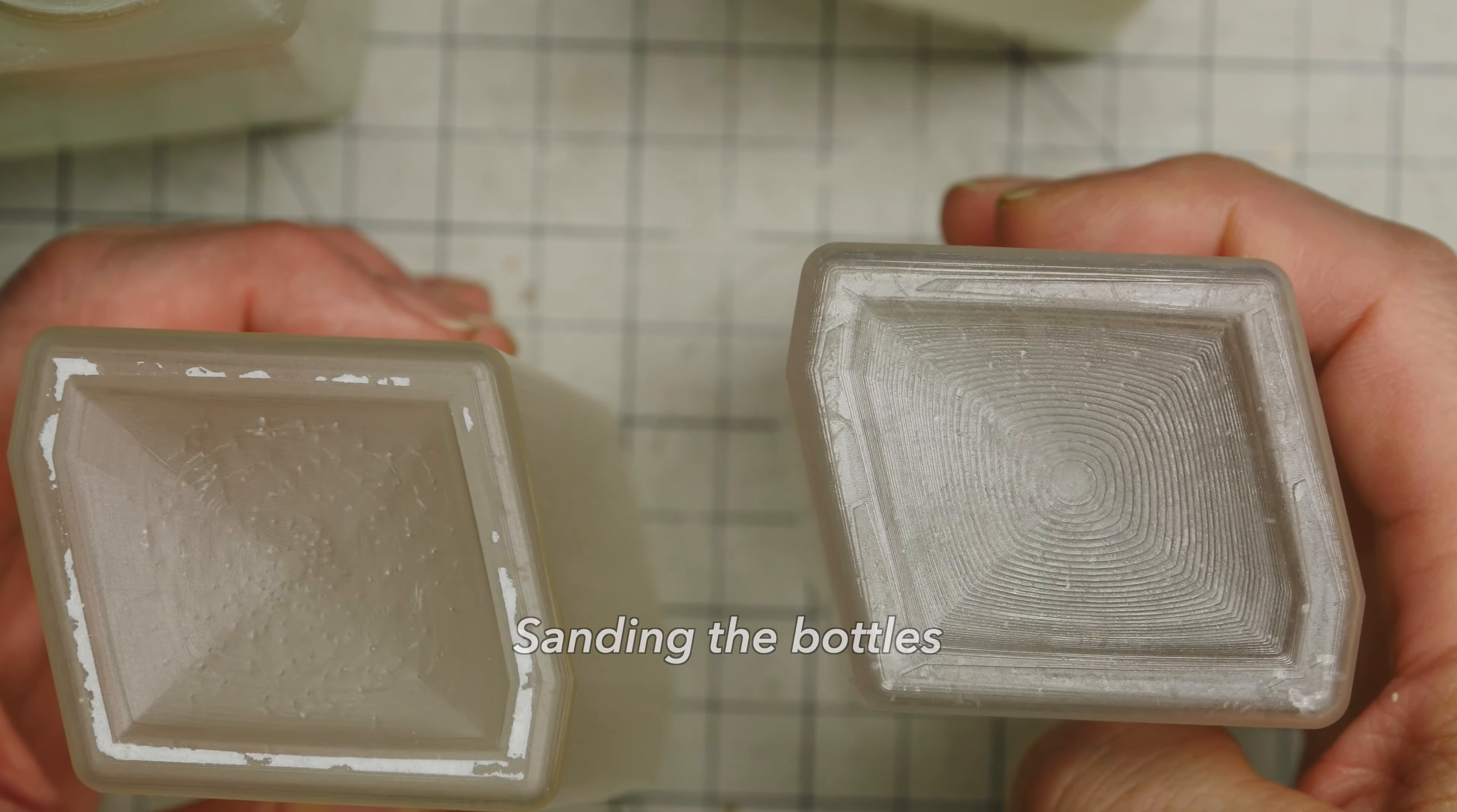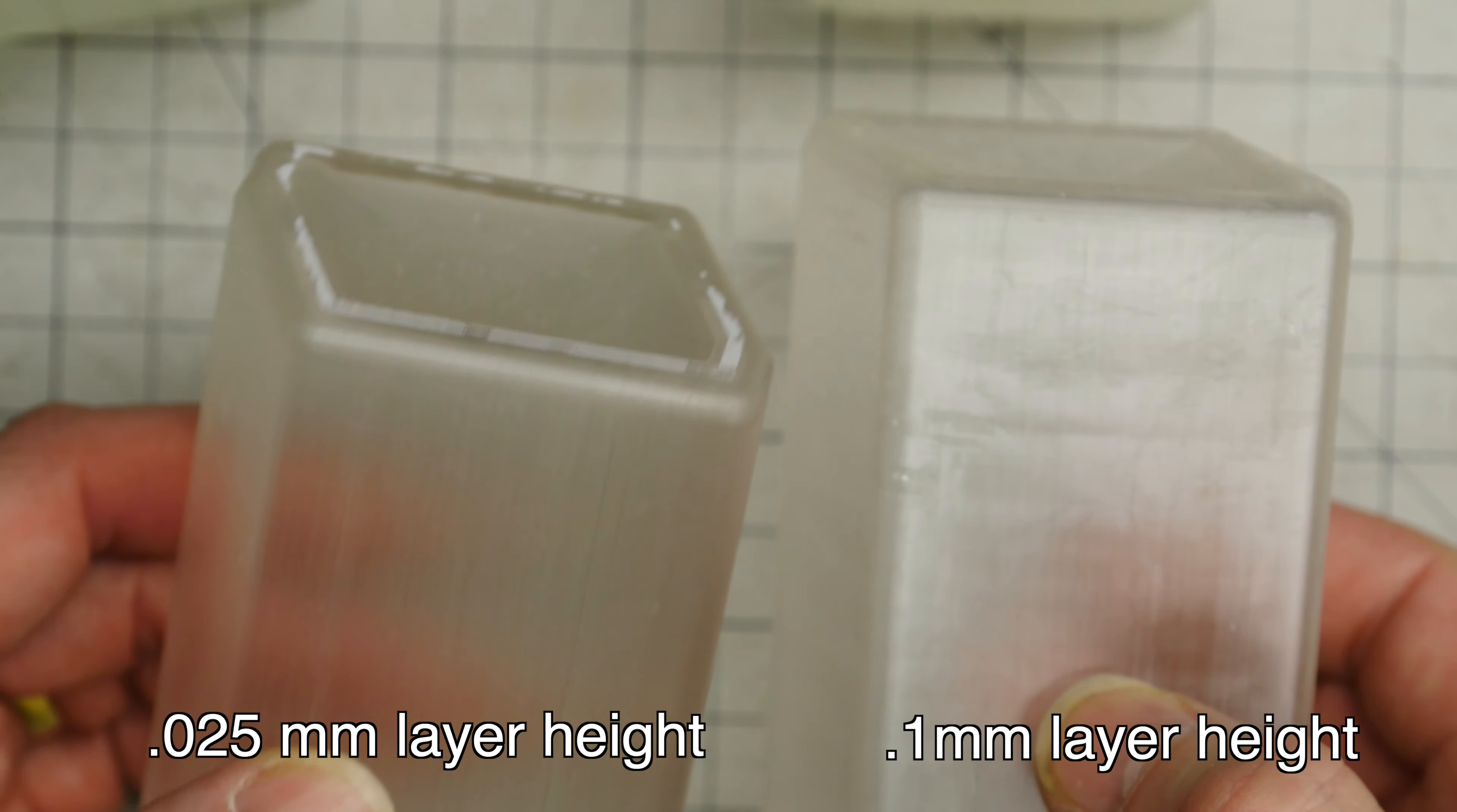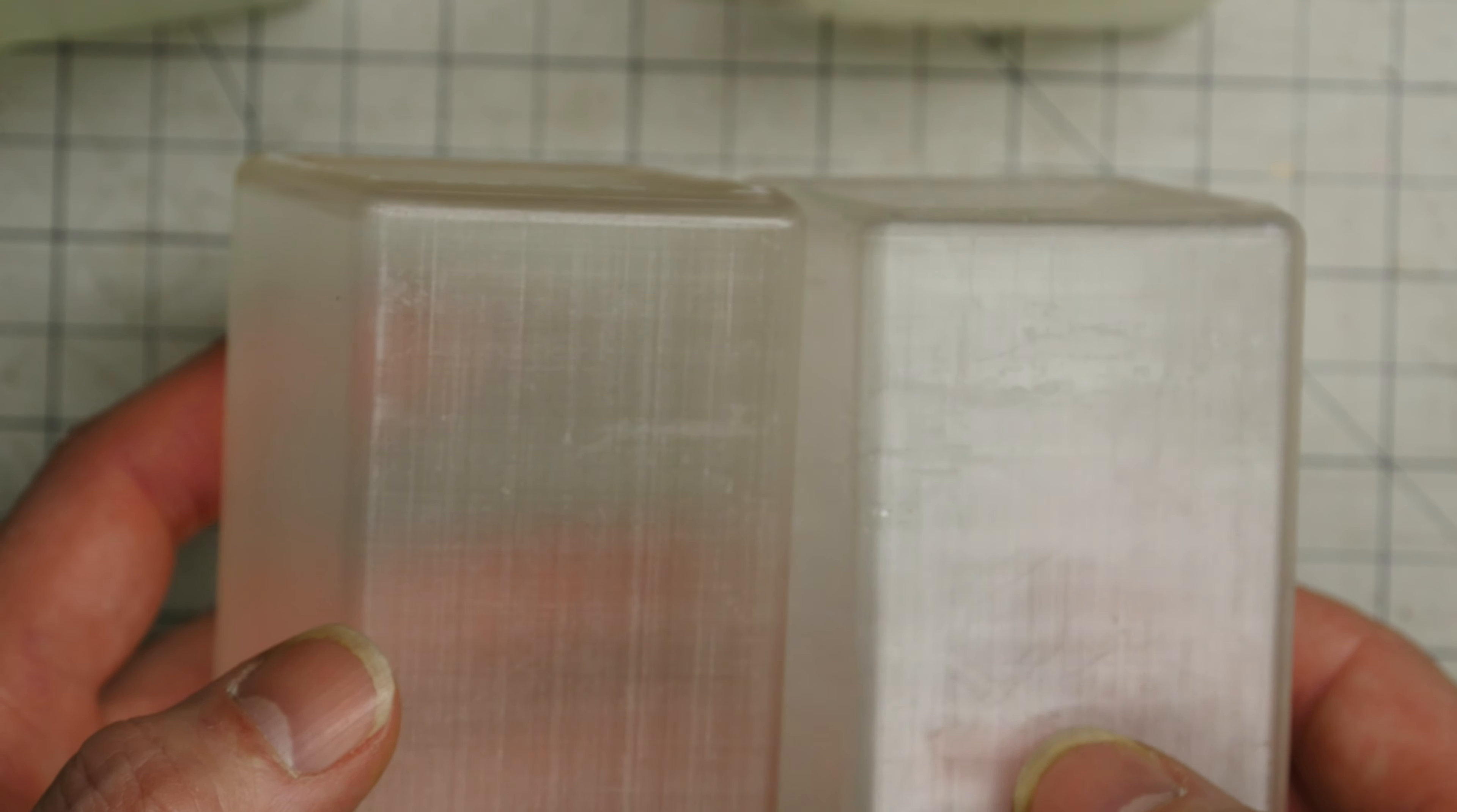This is the difference. This is the 0.1, and then this is the 0.025. And I actually think that the 0.025 one, this one right here, is actually a little yellowed because it took so much longer to print with the laser. And I think the laser actually yellows it a very slight amount.